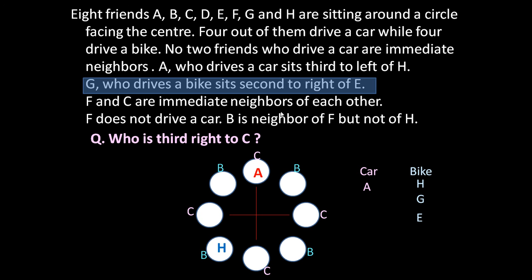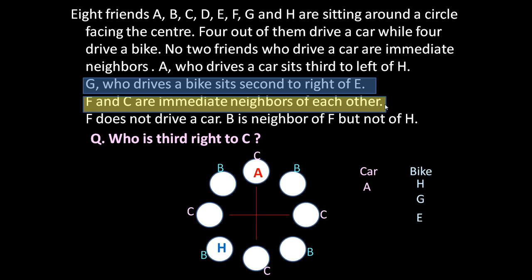F and C are immediate neighbors of each other — we will incorporate this afterwards. F does not drive a car, meaning F drives a bike. So now we have four bike drivers: H, G, E, and F. The remaining four — A, B, C, D — are driving a car.